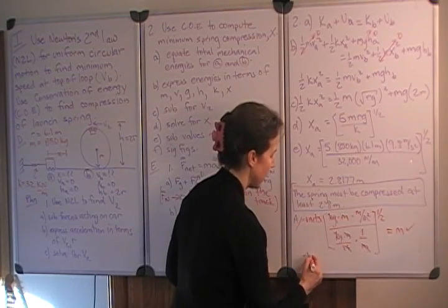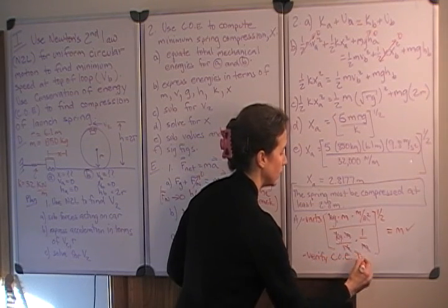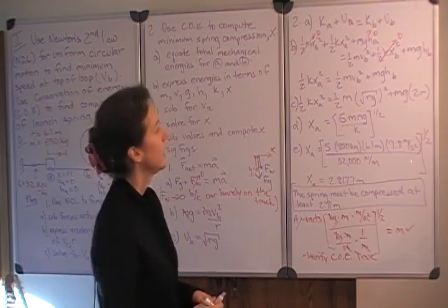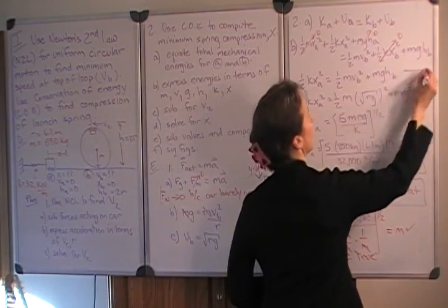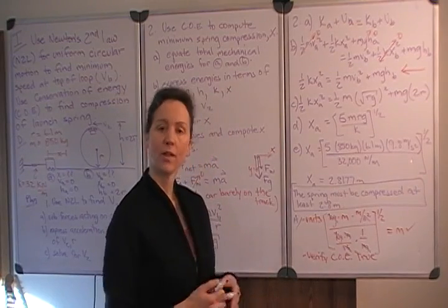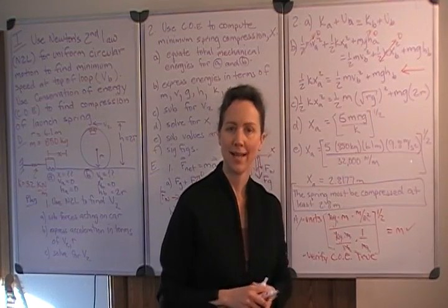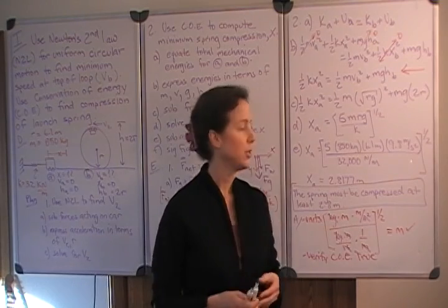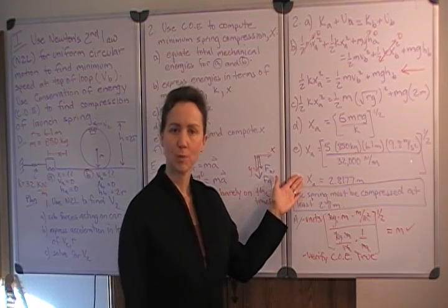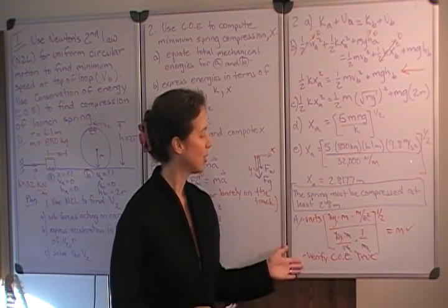Next, what you could do is verify that the conservation of energy is true. And you do that by substituting your answer into our simplified expression for the conservation of energy and verifying that the equality holds, that the number you get on the left-hand side is equal to the number you get on the right-hand side. Now, what you need to be careful to do is to use the full number for the compression of the spring and not your rounded number so you don't introduce rounding errors. So by taking this approach, you can develop confidence that your answer is correct.